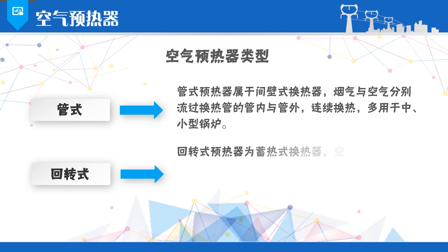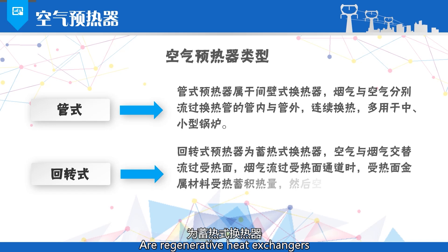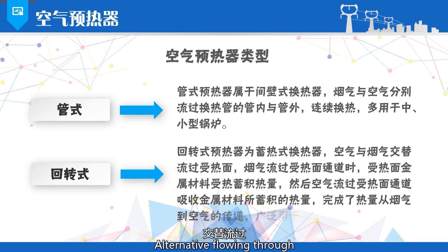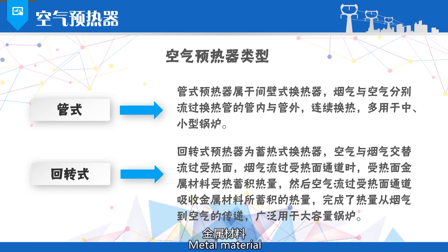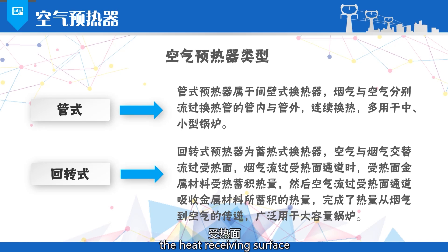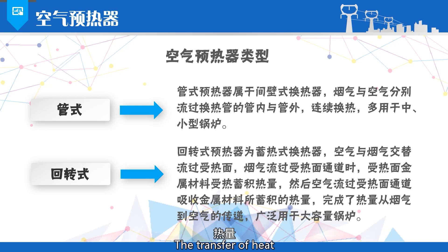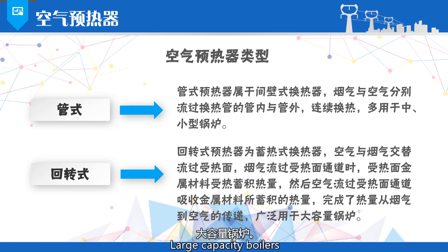Rotary preheaters are regenerative heat exchangers. Air and flue gas alternately flow through the heat receiving surface. When the flue gas flows through the heat receiving surface channel, the heat receiving surface material is heated, accumulating heat. Then the air flows through the heat receiving surface, absorbing the heat accumulated in the material, completing the transfer of heat from the flue gas to the air. They are widely used in large capacity boilers.